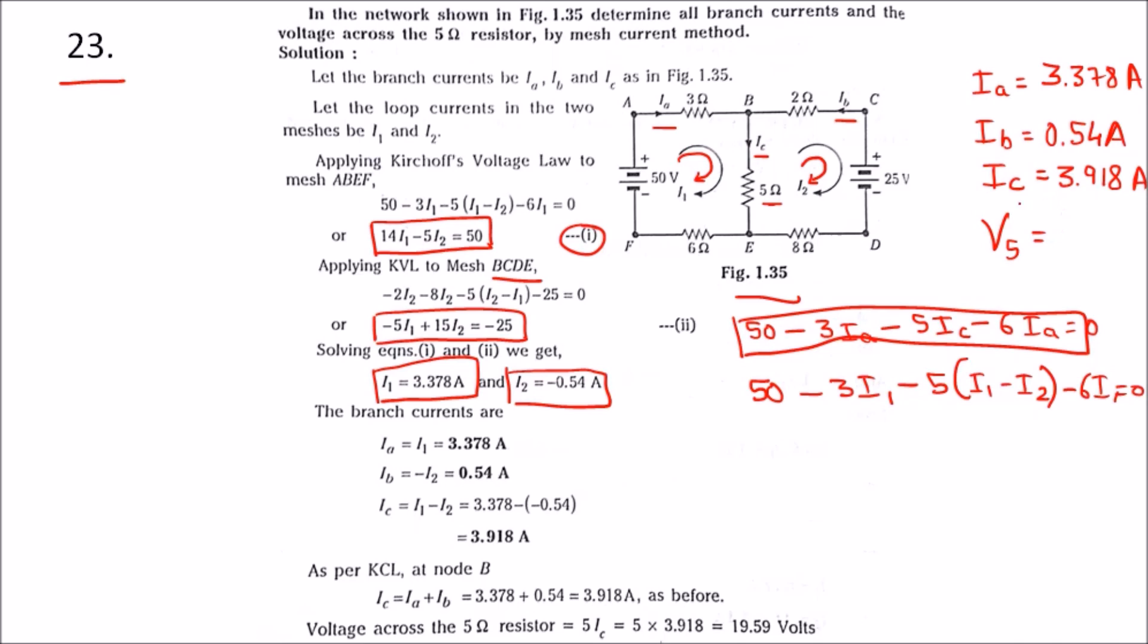Once we get Ic, the voltage across V5 equals 5 times Ic, which is 5 times 3.918 amps. Therefore, V5 equals 19.59 volts. We have found all four values.